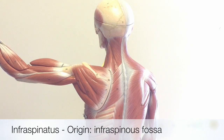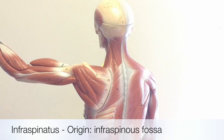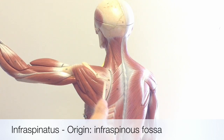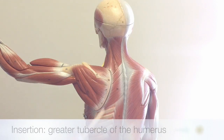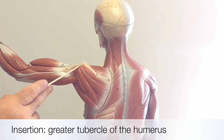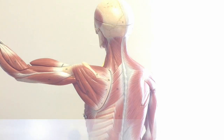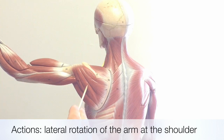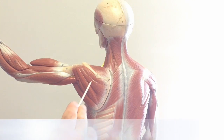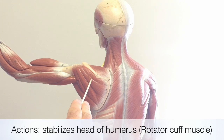Just under the supraspinatus is the infraspinatus. The infraspinatus is also named after its origin, which is the infraspinous fossa, the inferior groove just below the spine of the scapula. It also shares the same insertion point as the supraspinatus, the greater tubercle of the humerus. The actions of the infraspinatus include lateral rotation of the arm at the shoulder. It's also one of the rotator cuff muscles, helping to stabilize the head of the humerus in the glenoid cavity of the scapula.